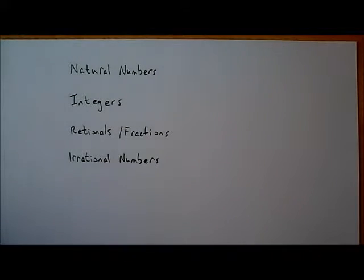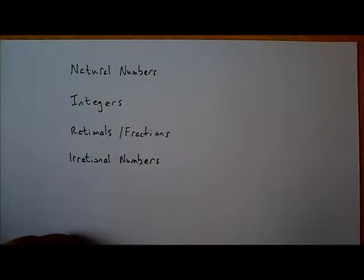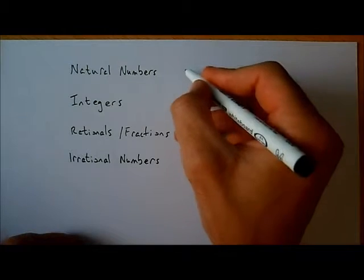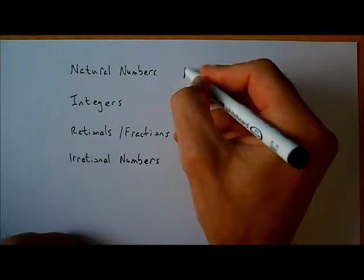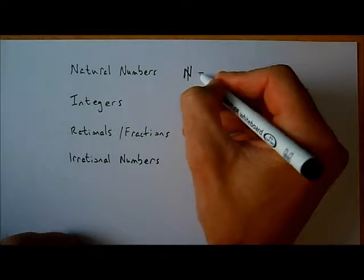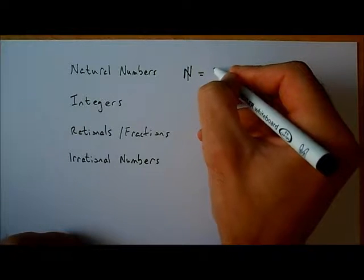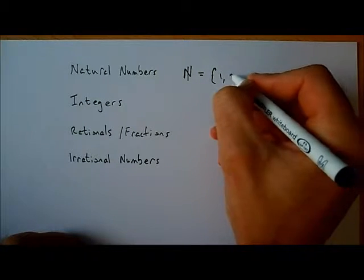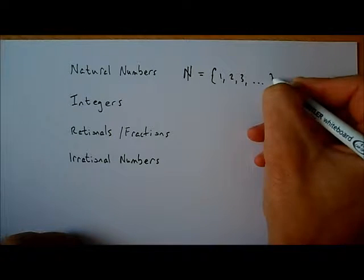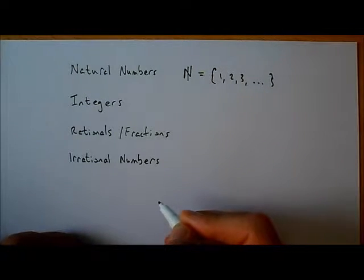Welcome to the first video on number theory. We're going to have a look at different types of numbers. The first set we're going to look at are the natural numbers. The symbol for the natural numbers is an N with a kind of a line going through it, and the natural numbers are the numbers 1, 2, 3, all the way up to infinity. So they're the positive counting numbers.